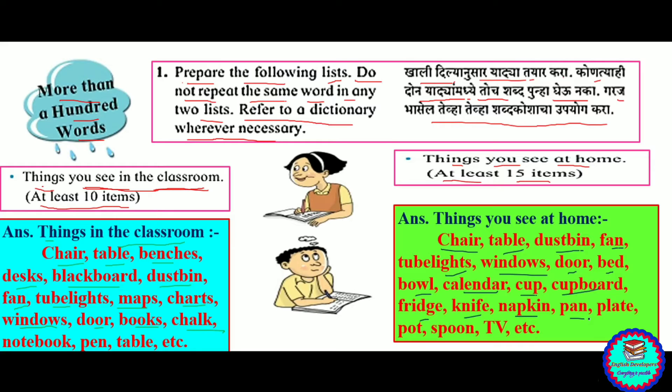...fridge, knife, napkin, plate, pot, spoon, TV — and other things we can see at home.